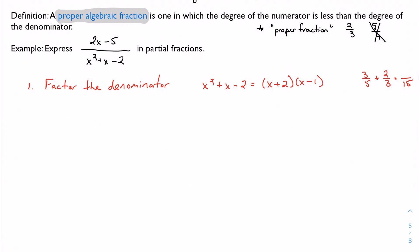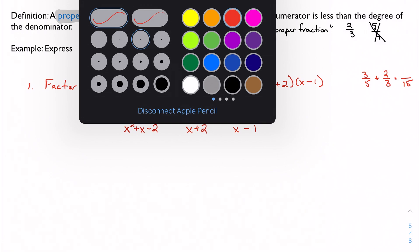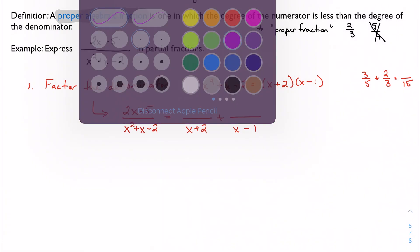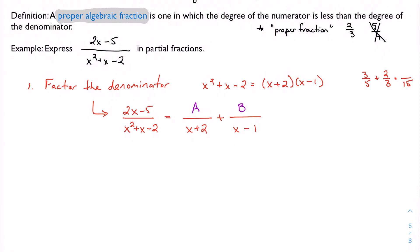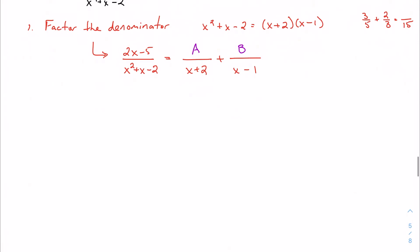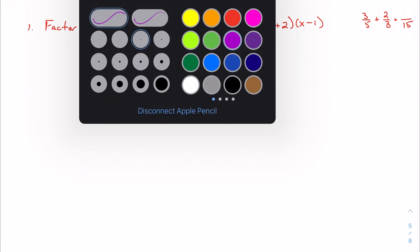This gives us the denominators of our decomposition. So I can take these denominators, and I can express my fraction, my rational expression, as the sum of two smaller rational expressions, whose denominators are x plus two and x minus one. We don't know what our numerators are yet, so we're just going to call them A and B for now. So I've got some kind of structure, right? I know sort of what's about to happen here.